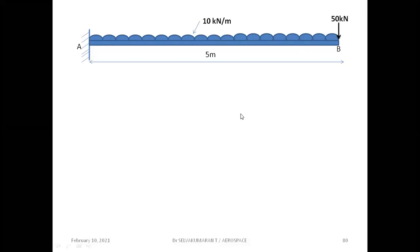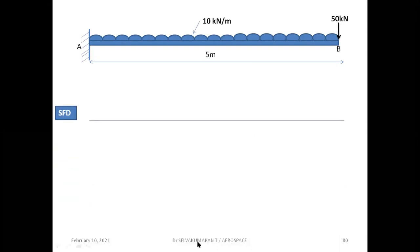For a cantilever beam, we have to start our calculation procedure from the free end. Now let us get into the calculation of shear force values. I have a UDL, so without taking any section we can calculate shear force values and plot, but just to check the values mathematically I'm writing down the shear force expression. I've taken a section XX at a distance x from the free end B.